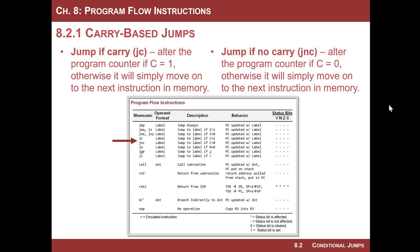The first set of conditional jumps we want to look at are carry-based jumps. Jump if carry — JC — takes the jump when C is equal to one. It will alter the program counter if C is equal to one.